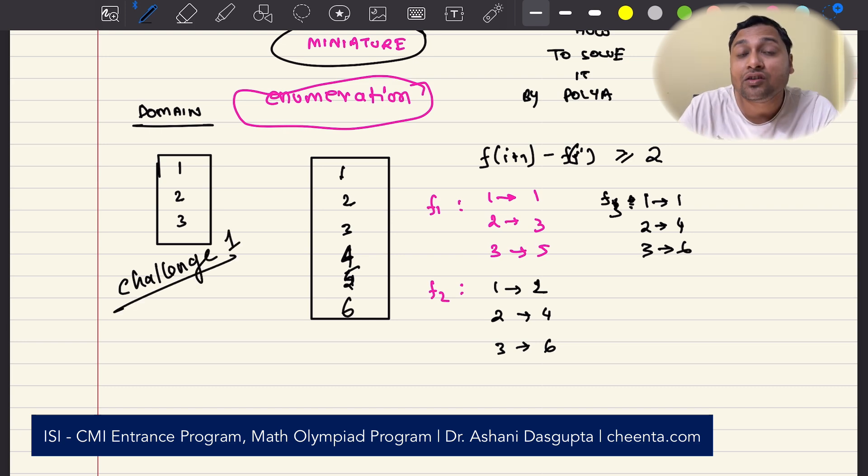Challenge 1: Can you enumerate all such functions and put it in the comment section? Do not solve it in the other interesting way that we will discuss in a moment. Just write down all possible. I've written down 3 of them. You write down all of them in the comment section. Let's see if you can do it.